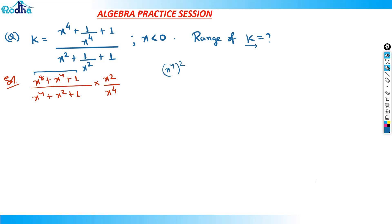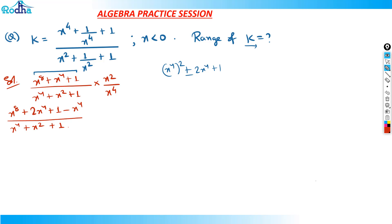I can see that the numerator can come to the form x⁴ squared ± 2x⁴ + 1, which is an a² ± 2ab + b² form. So what I will do is add x⁴ and subtract x⁴. Once I add x⁴, the numerator becomes x⁸ + 2x⁴ + 1 minus x⁴, and I can write x⁸ + 2x⁴ + 1 as (x⁴ + 1)².